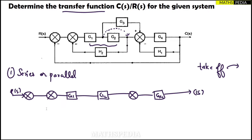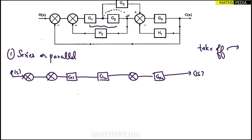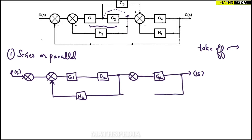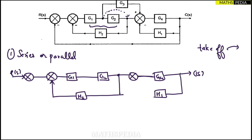Now I need to shift that takeoff point. Before that, I'll draw the rest. One feedback is going to the summing point — that's H2. Another feedback from the output is going towards the summing point — that is H1, with a minus sign. Be careful with the signs.